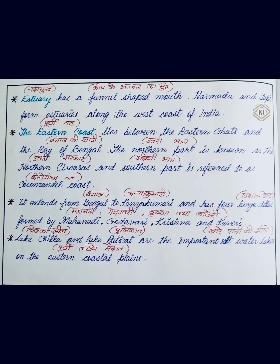The four deltas are formed by the Mahanadi, Godavari, Krishna, and Kaveri rivers. Lake Chilika and Lake Pulikat — Chilika Jheel aur Pulika Jheel — are important salt water lakes on the eastern coastal plains. Both of these salt water lakes are found on the eastern coastal plains.